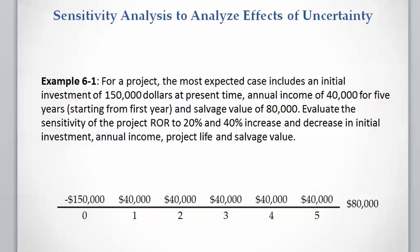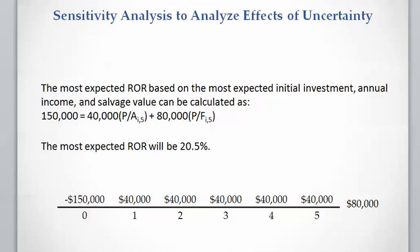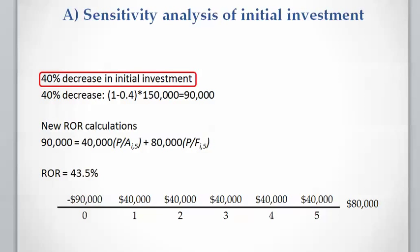This investing project requires $150,000 of investment at the present time. It yields an annual income of $40,000 for five years, from year one to year five, and a salvage value of $80,000 at the end of year five. We want to evaluate the sensitivity of the project rate of return to 20% and 40% changes — increase and decrease — in initial investment, annual income, project life, and salvage value. We solve for the IRR using Excel and calculate the base case rate of return as 20.5%.